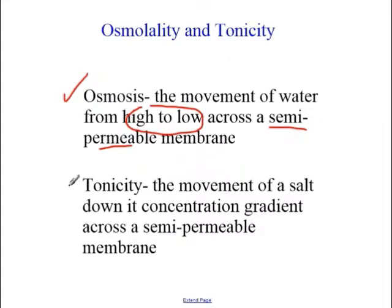Which brings us to the second idea: tonicity. Tonicity means the amount of salt something has—it's kind of the opposite idea. Something can have a lot of salt and something can have a little salt, but how a semi-permeable membrane acts is differently because salt has trouble moving across it. If salt can move across, the movement of salt would go from a concentration gradient from high to low. Tonicity means the movement of salt down a concentration gradient across a semi-permeable membrane.